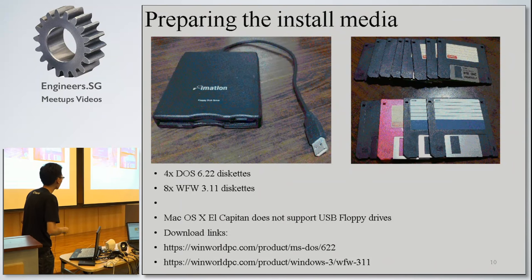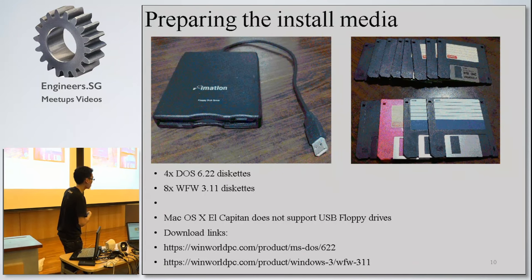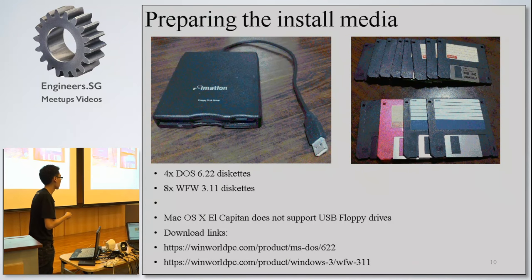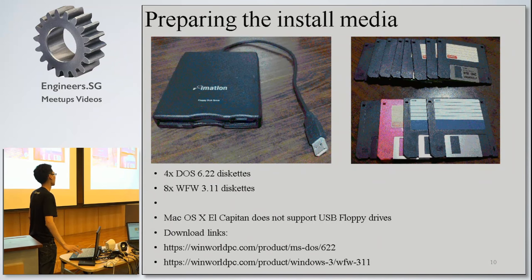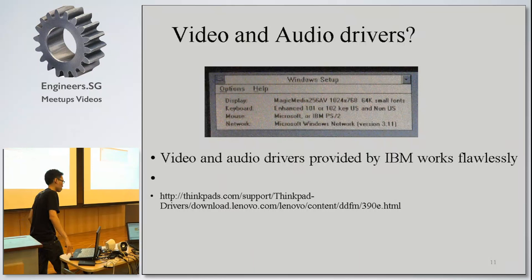Preparing the install media: DOS comes on four diskettes, and Windows for Workgroups comes on eight diskettes, so I had to write them one by one and install. Something interesting to note: the new Mac OS El Capitan does not support USB floppy drives anymore, so I couldn't use the Mac to write the disks.